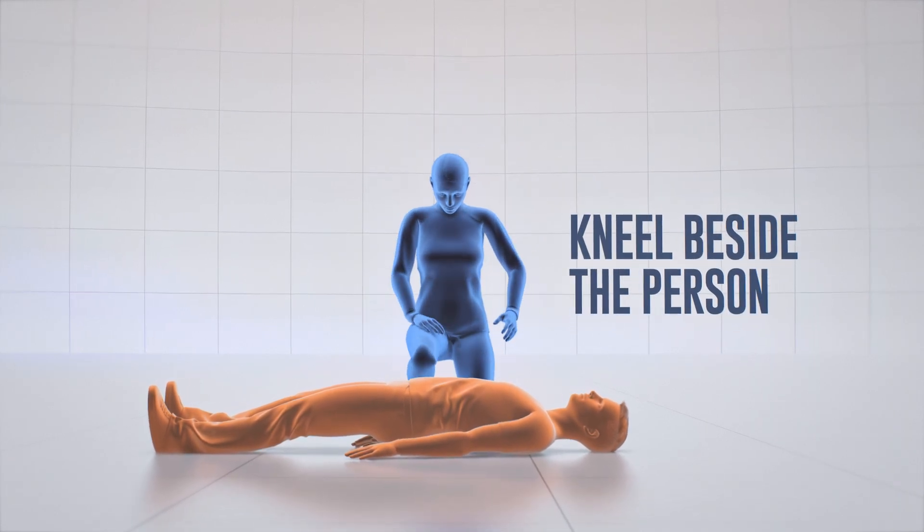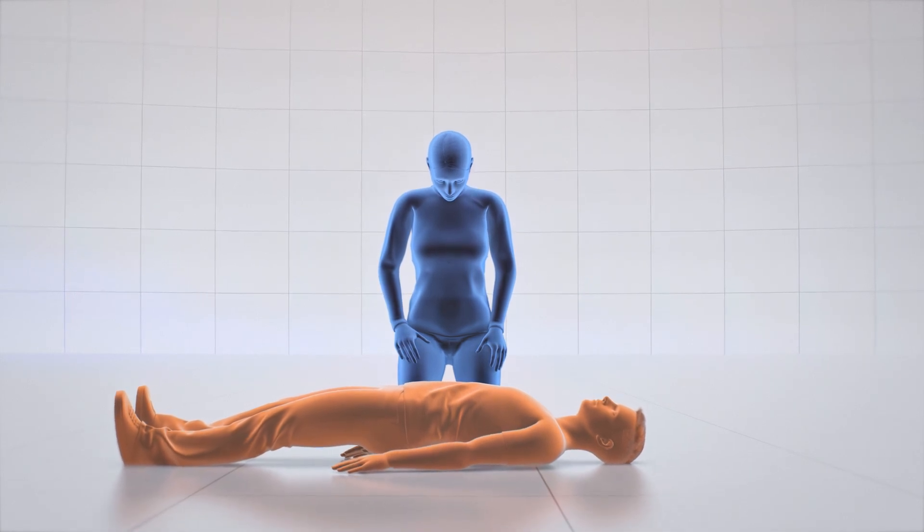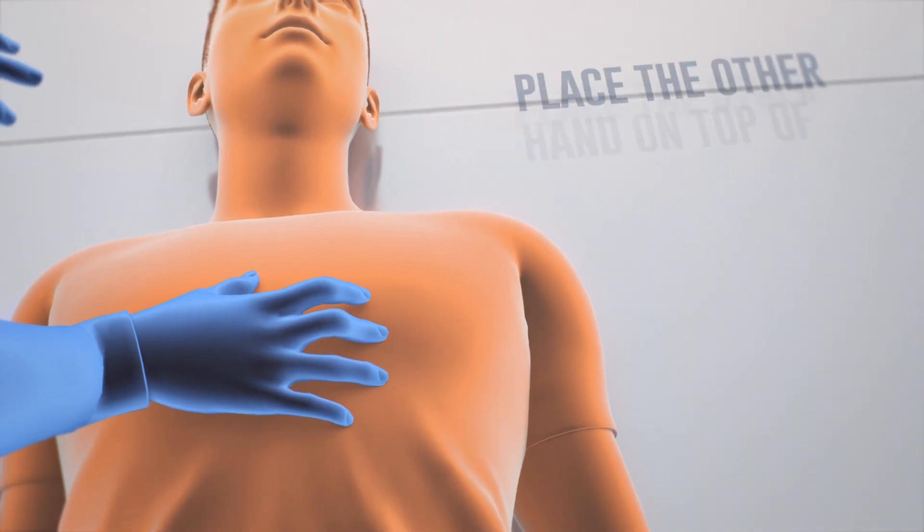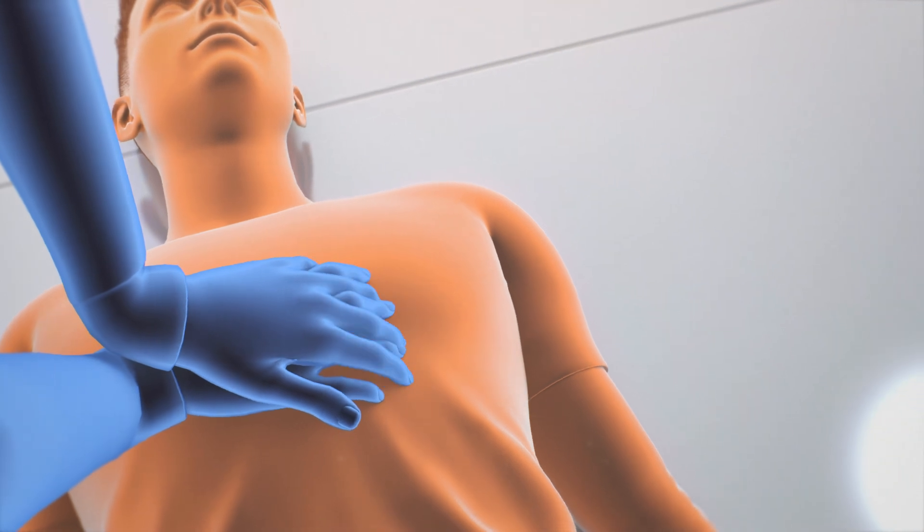Kneel closely beside the person who has collapsed and make sure they are face-up on a firm, flat surface. Place the heel of one hand in the center of the chest between the nipples. Place the heel of the other hand on top of the first hand and then interlace your fingers.